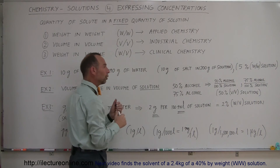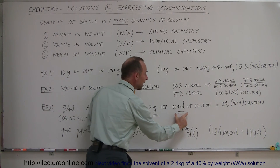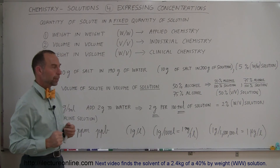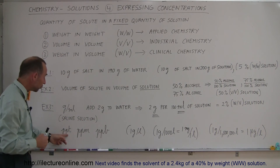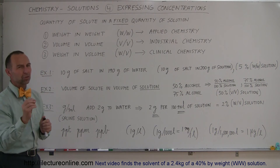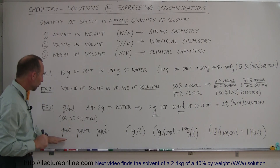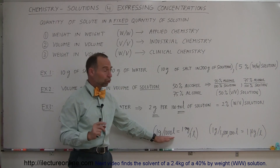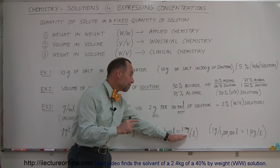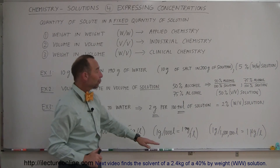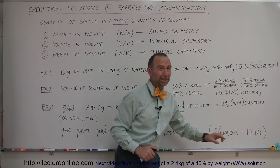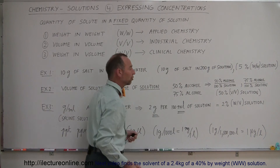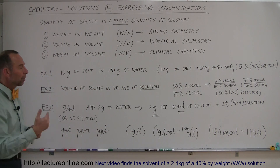Typically we look at it in terms of how many grams per 100 milliliters, and that's how you get the percent solution — so 2 grams in 100 milliliters is a 2% solution. We can also look at it in terms of parts per thousand, parts per million, or parts per billion, which we use when concentrations are very slight. Parts per thousand means 1 gram per liter of solution; parts per million means 1 milligram per liter; and parts per billion means 1 microgram per liter — very, very small quantities.